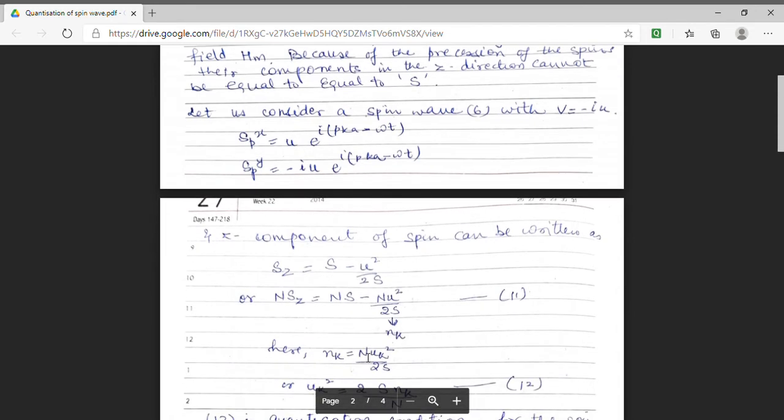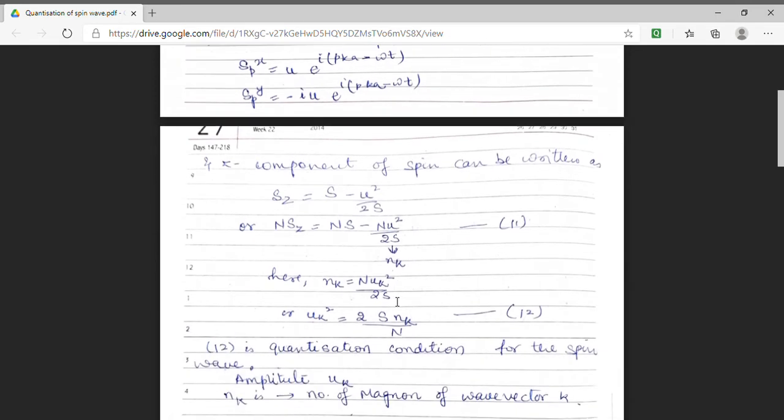Now, as there are n number of spins, I have multiplied the expression by n. This gives me nSZ equal to nS minus nU square upon 2S. nSZ denotes the total number of spins. So this will also be a number. Let me denote it by small number nK. This nK denotes the number of magnons which have a wave vector k. So my nK is nUk square upon 2S. From here, I get my amplitude uK square to be equal to 2S nK upon capital N.